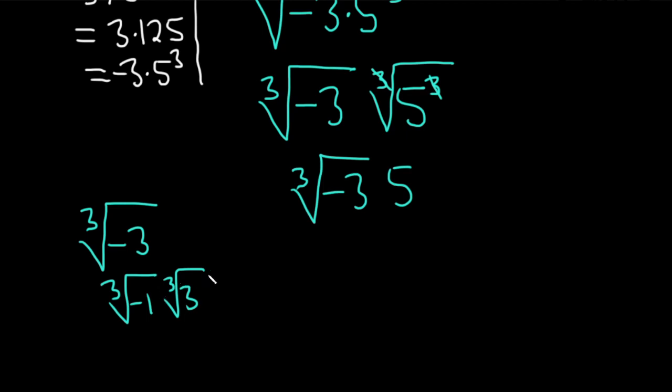And so now what you can do is that the cube root of negative 1 is just negative 1. So that's just negative cube root 3, 5.